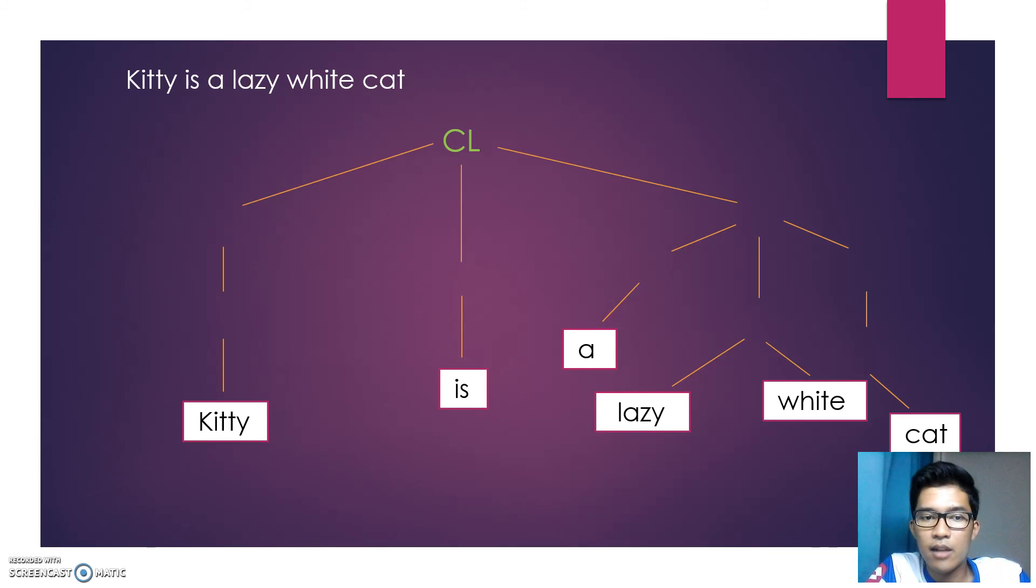For this example, 'Kitty' is a noun, we put it under noun phrase. 'Is' is an auxiliary verb. 'Lazy white cat' - we have two adjectives there, so we are going to put this constituent under adjective phrase. 'A' is a determiner, so 'lazy' and 'white' are both adjectives. 'Cat' is a noun, so we put it under noun phrase. So that's it. Thank you.